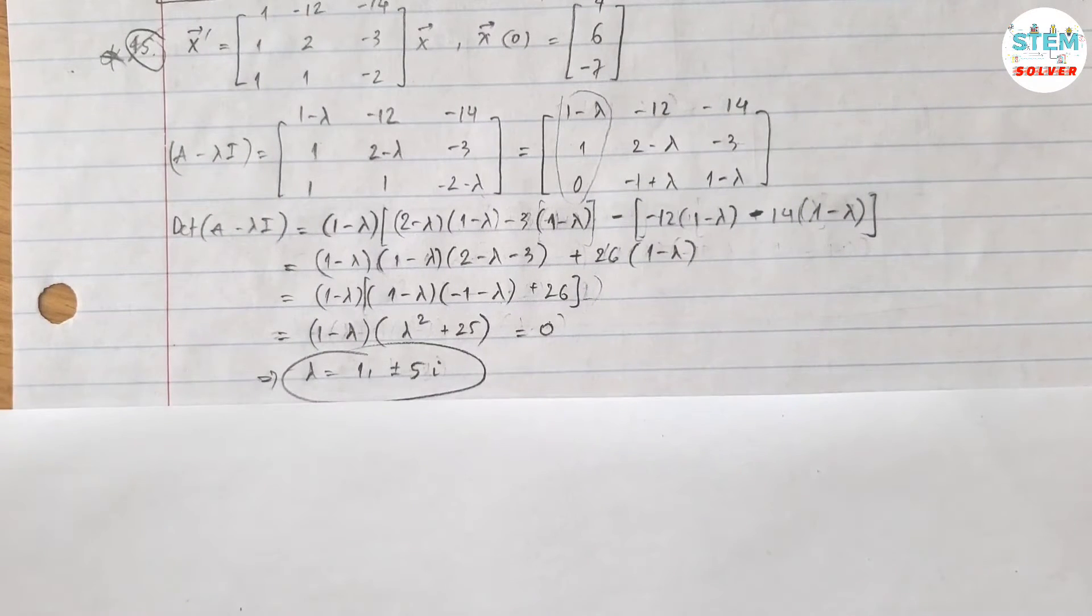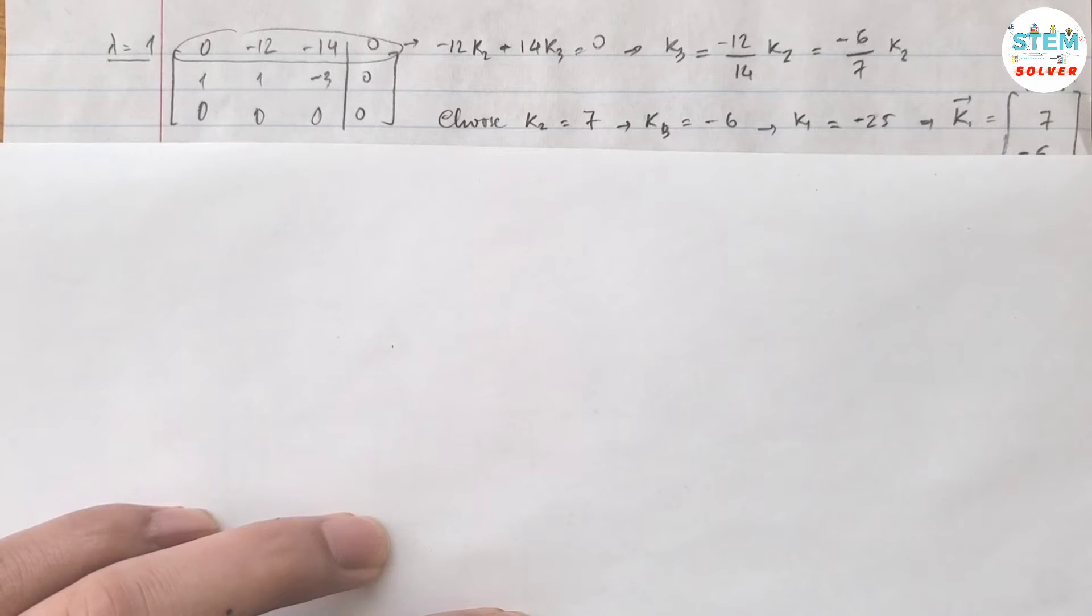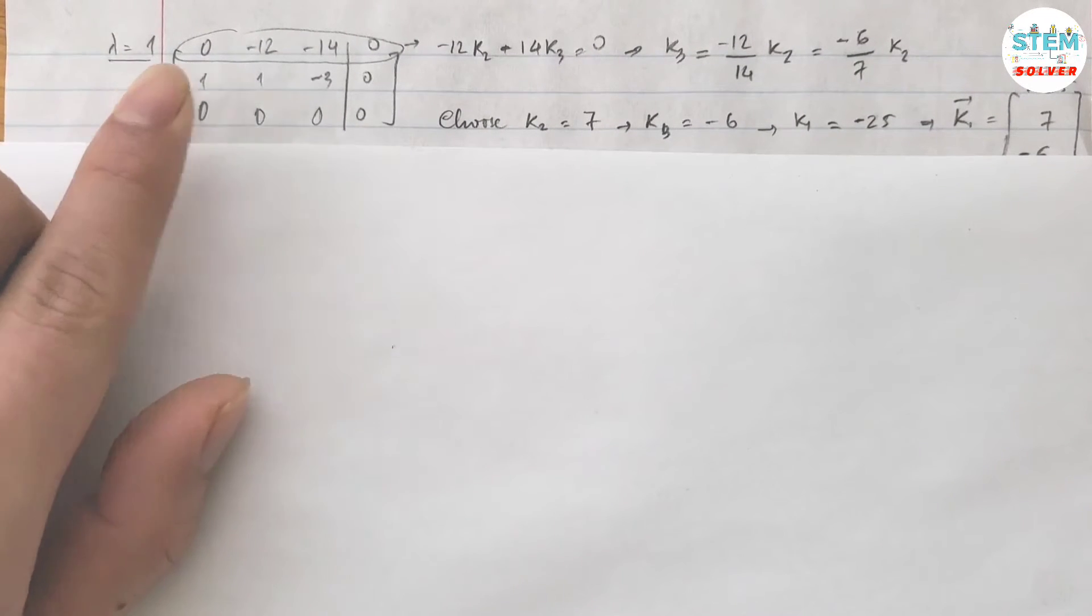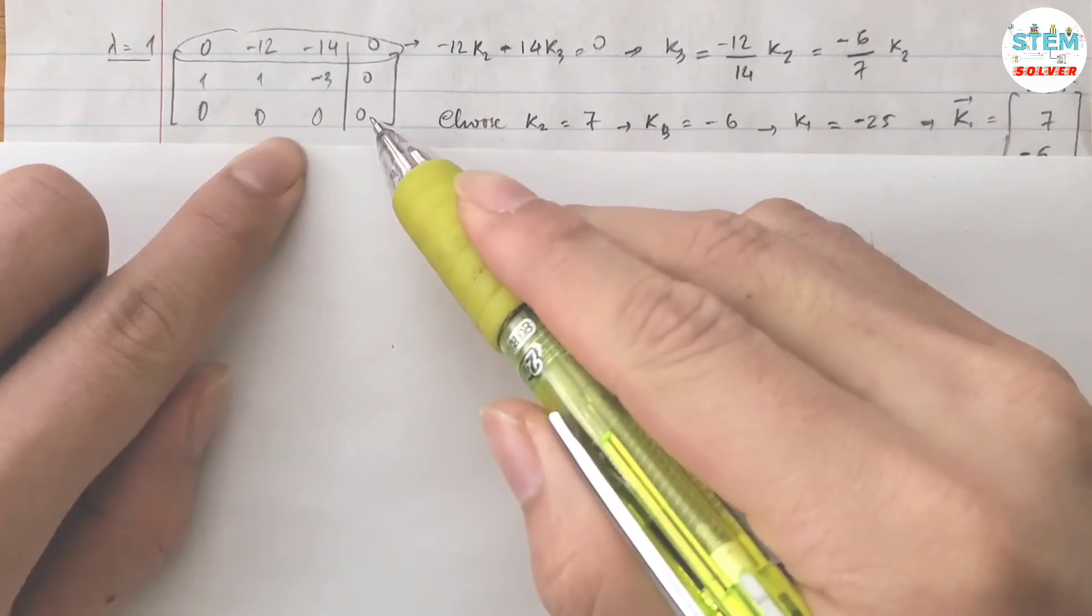Now let's take a look at the case when lambda equals one. Plug one into A minus lambda I, that gives you this matrix augmented with zero.